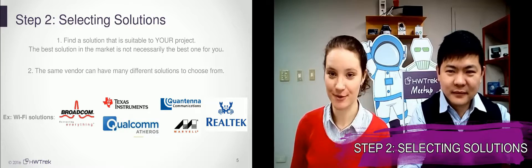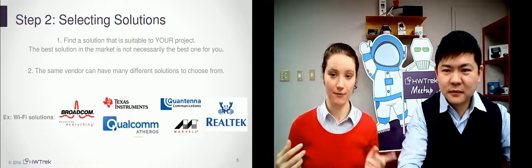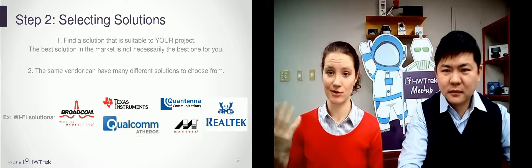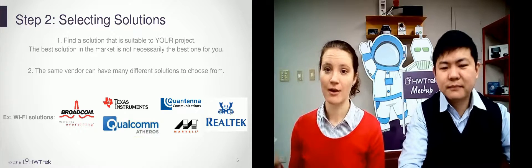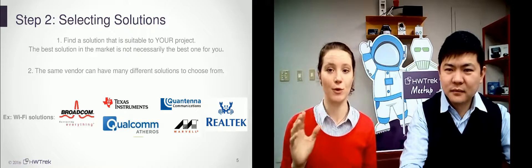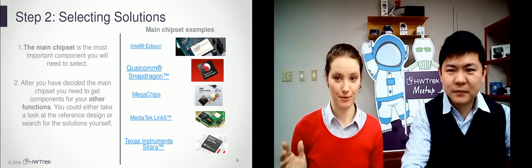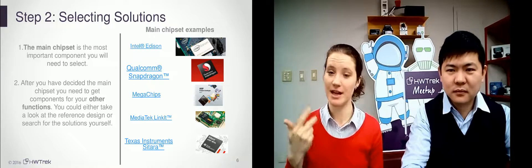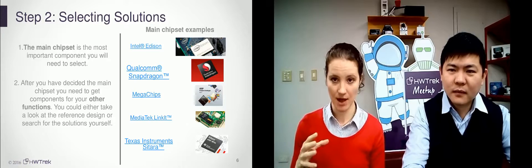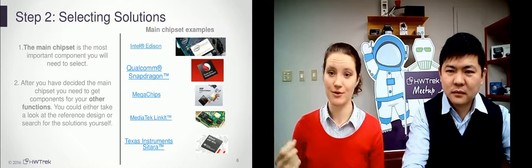Step number two: selecting solutions. In this step, you need to find electronic components that actually enable the functions you defined in the first step. Each solution, each electronic component, has many vendors — so basically, selecting solutions is selecting who you're going to buy them from. Remember one important point: the best solution, the most expensive one, is not necessarily the best for your product. The main chipset is the most important component you will need to choose, because functionality, firmware, software, and interface — everything will depend on the main chipset. So if you start developing your product on one chipset and then decide to switch to another, it will cost you a lot of time, effort, and money. So choose your chipset wisely.